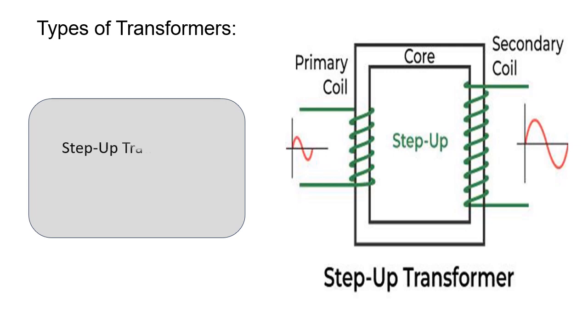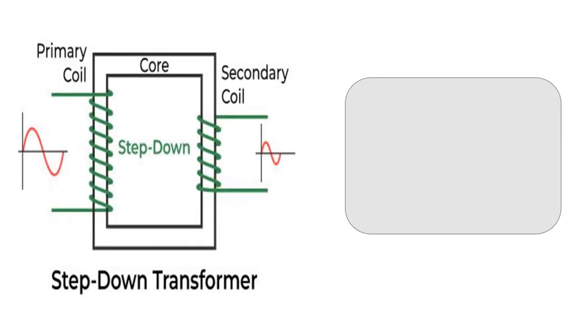Types of transformers: Step-up transformer increases voltage from primary to secondary. Step-down transformer decreases voltage from primary to secondary.